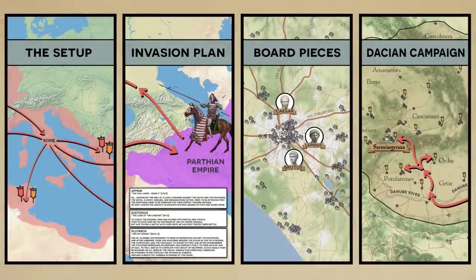Our first part in the series will cover the following sections: The Setup brings us all up to speed on the events of the day. The Invasion Plan covers what we know about the invasion strategy from historical records. The Board Pieces lays out the key players on the Ides of March, and the Dacian Campaign walks through a plausible unfolding of events based on relevant historical parallels.